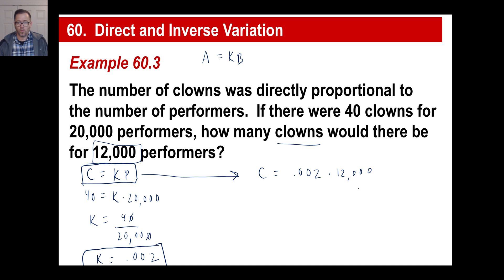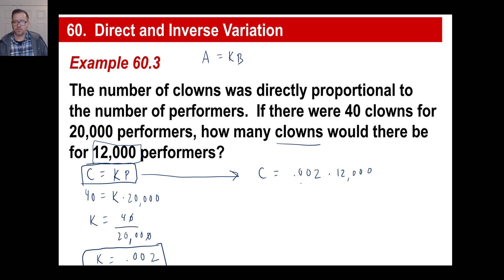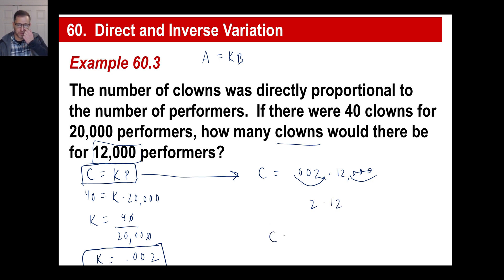Using K equals 0.002 and 12,000 performers: clowns equals 0.002 times 12,000. You can shift the decimal — that gives 2 times 12, so the number of clowns would be 24.